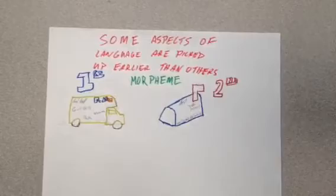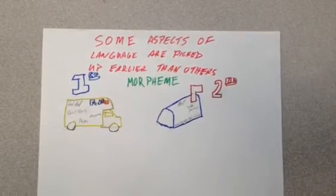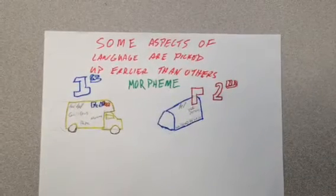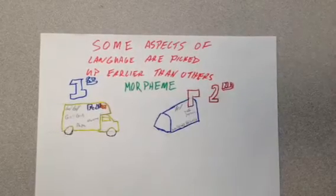Some aspects of language are picked up earlier than others. Picking up sounds such as the letter M or P for Mama and Papa are picked up earlier rather than picking up the R or speaking in the third person.